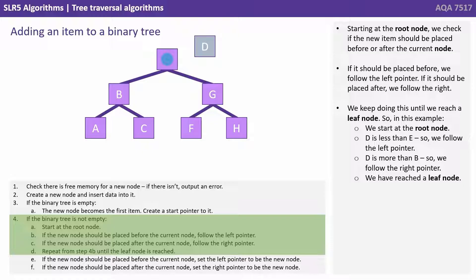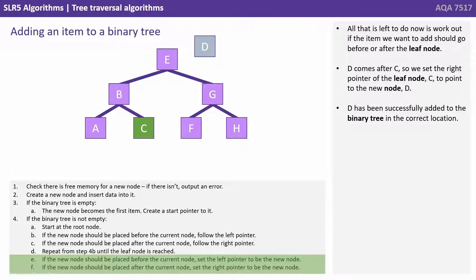Starting at the root node, we check if the item would be placed before or after the current node. It should be placed before, so we follow the left pointer. If it should be placed after, we'd follow the right pointer. We keep doing this until we reach a leaf node. In this example, we start at the root. D is less than E so we follow the left pointer. D is more than B so we follow the right pointer. We've reached a leaf node. D comes after C, so we set the right pointer of the leaf node C to point to the new node D. D has been successfully added to the binary tree in the correct location.